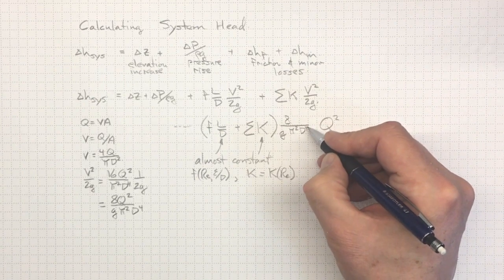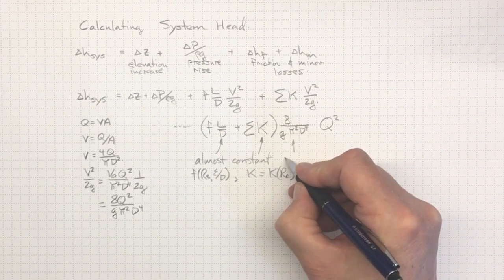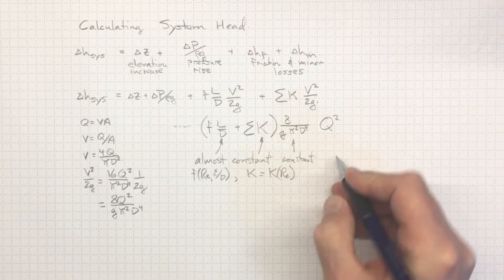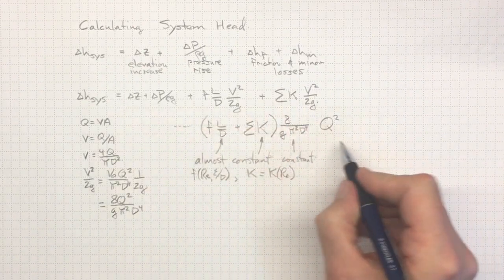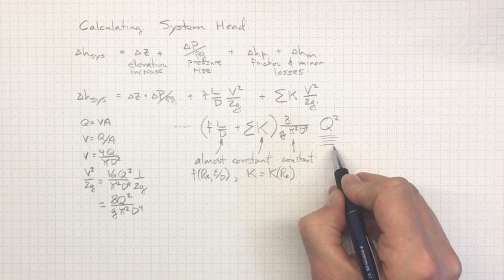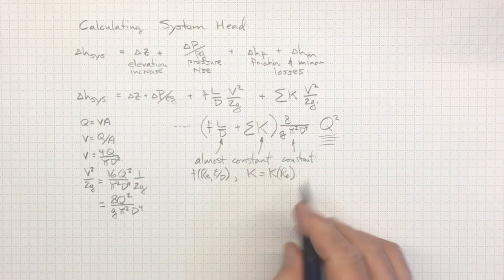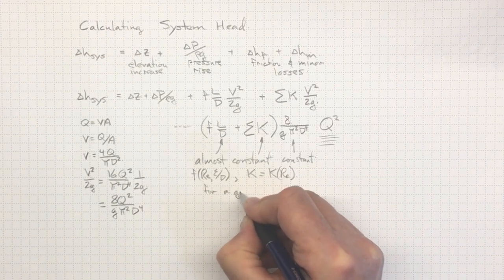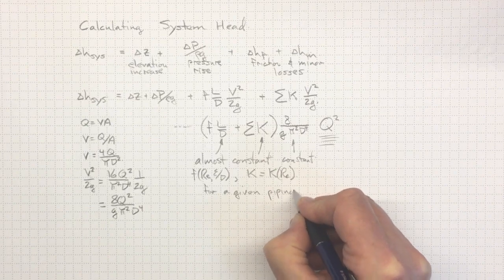And of course, 8G pi squared and D to the fourth, those are just constants. So we'll see that these losses are depending primarily on the flow rate squared. Now these are constants, at least for a given piping system.